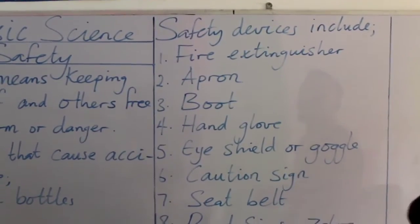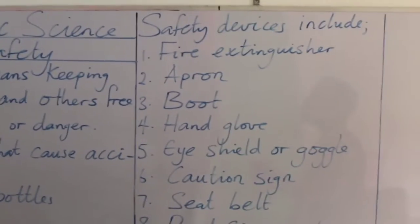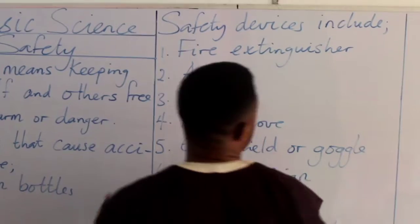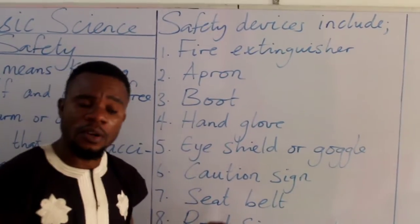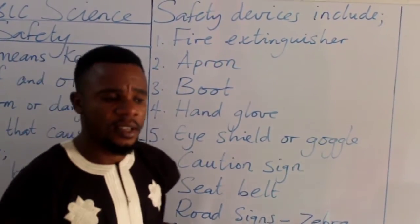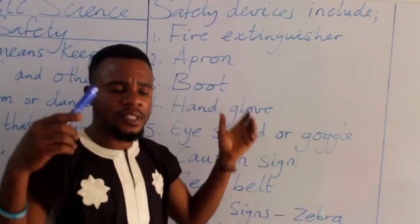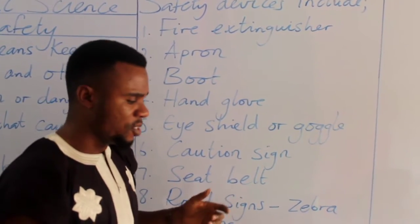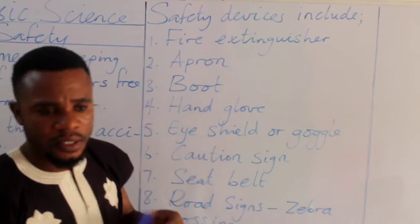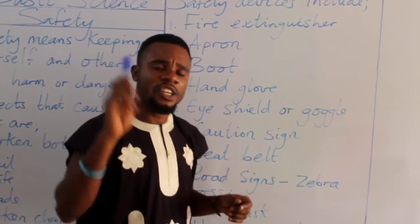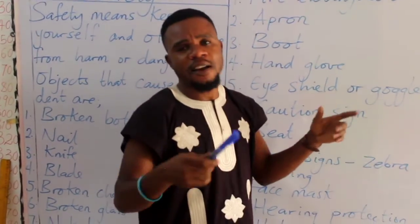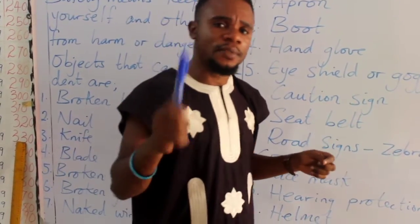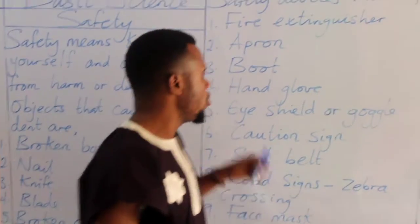Now we go to another section, which is safety devices. We have lots of safety devices depending on where you're working. As a teacher, you have your safety device. As an engineer, you have your safety device. Every occupation has its safety device — you don't go to work without your safety device, especially engineers, because they are exposed to various substances or objects.